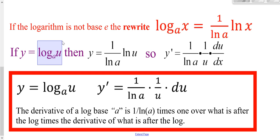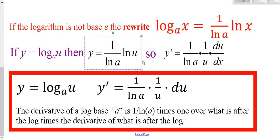For the log of not base e — log base A — you can rewrite it using the change of base formula. Taking the derivative, you still have 1 over ln(A) in front. The derivative of the natural log gives 1 over U, and then DU/DX is the chain rule. So in general, the derivative of log base A of U is 1 over ln(A) times 1 over U times DU, the derivative of the inside.